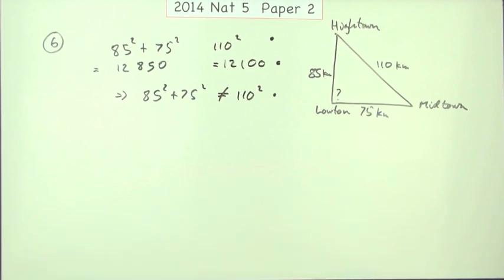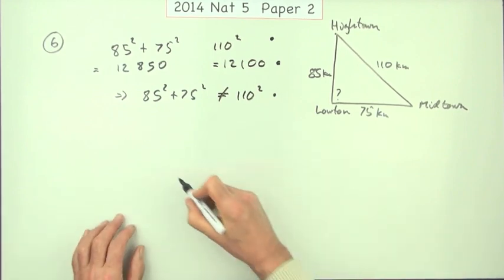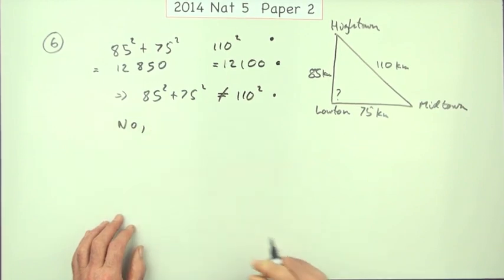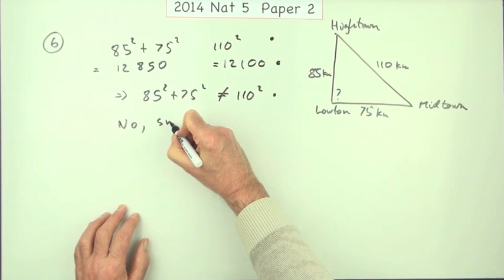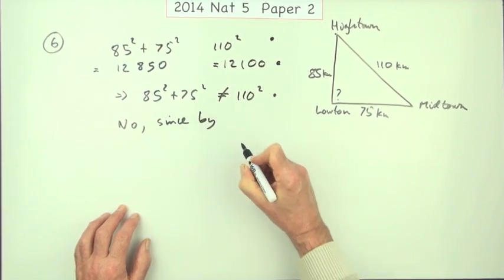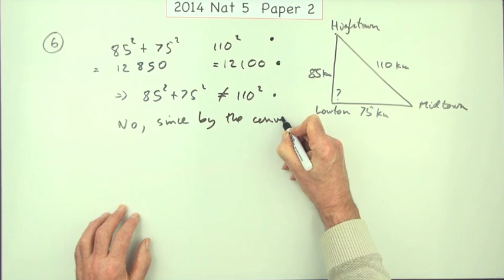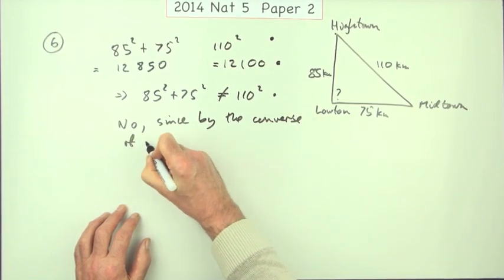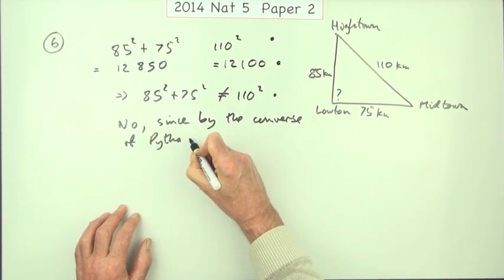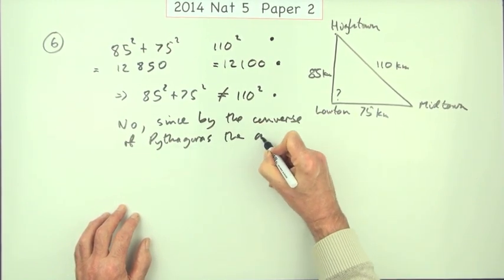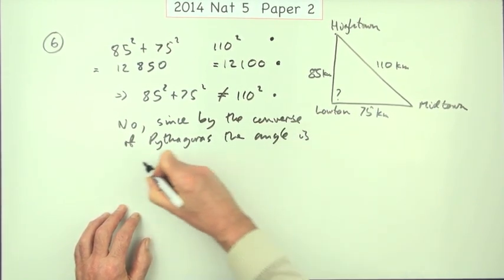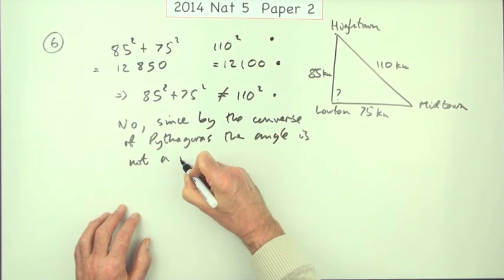Now a conclusion. Is it due north? You've got to answer the question, no. Why not? Because it's not a right angle. No. Since, I think I'll put this in, by the converse of Pythagoras, the angle is not a right angle. I know there's a lot of writing.